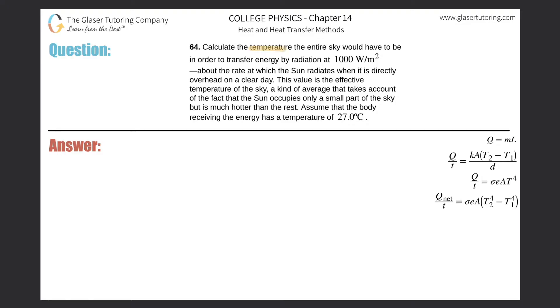Number 64: Calculate the temperature the entire sky would have to be in order to transfer energy by radiation at 1000 watts per meter squared, about the rate at which the sun radiates when it's directly overhead on a clear day. This value is the effective temperature of the sky, a kind of average that takes account of the fact...